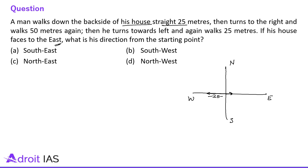Then he turns to the right and walks 50 meters again, then turns towards left and walks 25 meters. What is his direction from the starting point? If this is the starting point, so he is here. He is in the north-west direction. So the correct answer is option D, which is north-west.